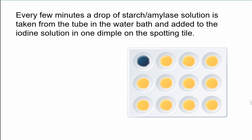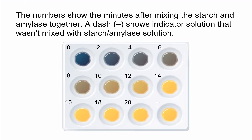Every few minutes we're going to take a drop out of the starch-amylase solution sitting in the water bath, and add it to one of the dimples in the tile. Here you can see the first one carried out and it's a blue-black mixture. So we can see the results of this experiment — this was at time zero, then at two minutes a little drop was taken out and placed in the iodine, and this was done every two minutes.